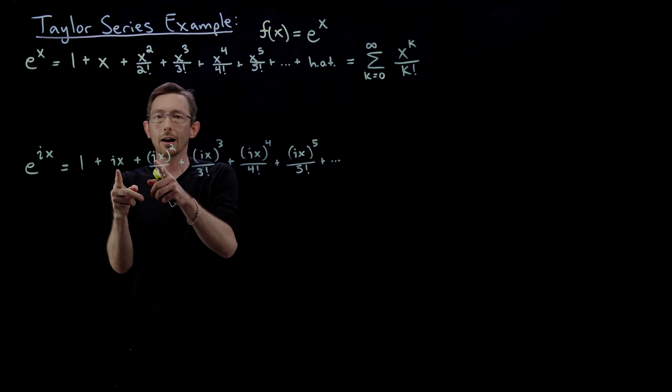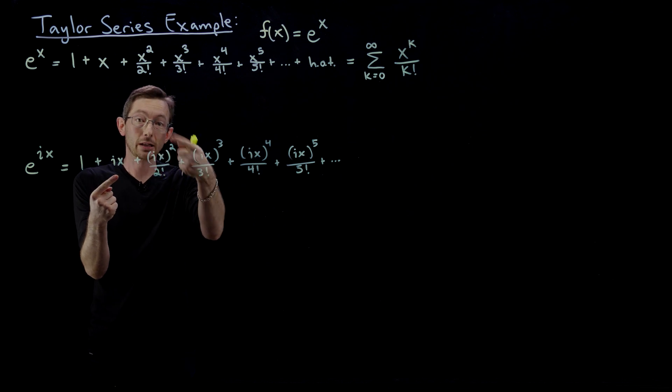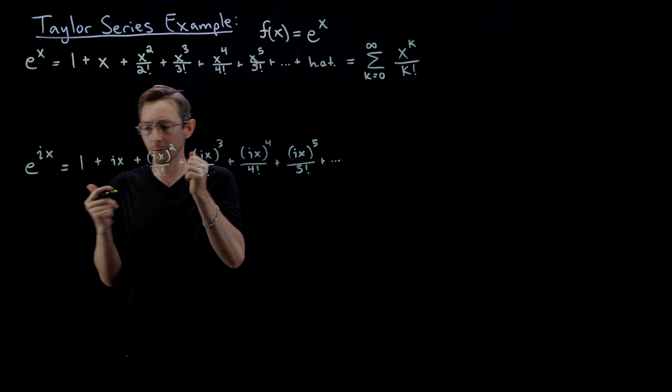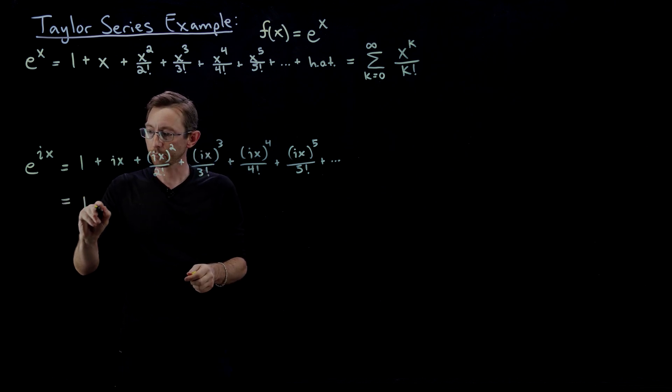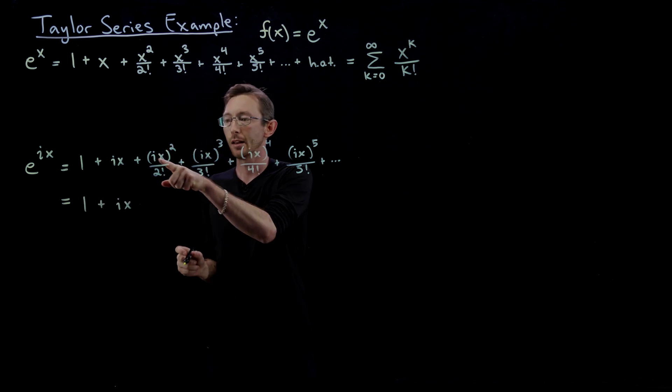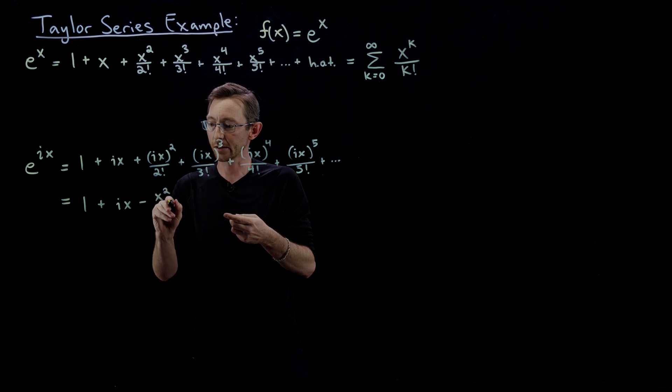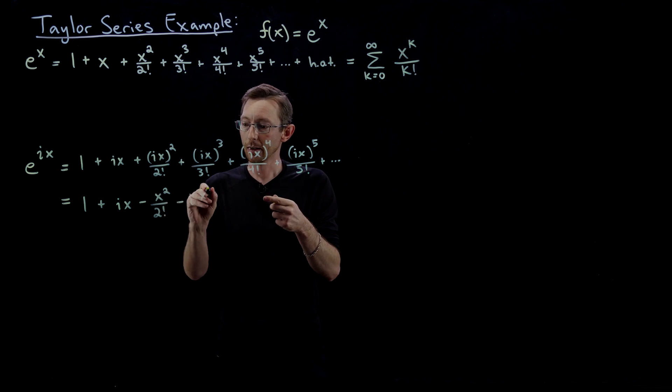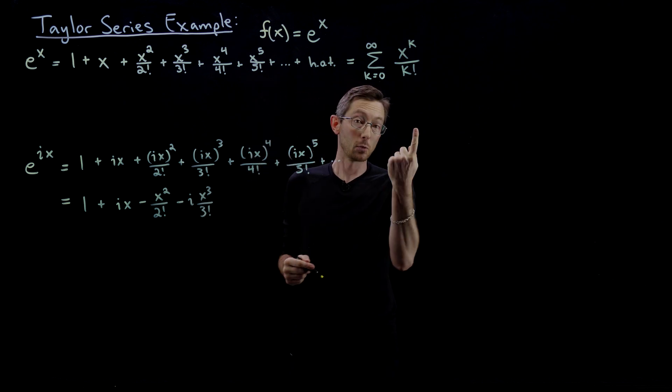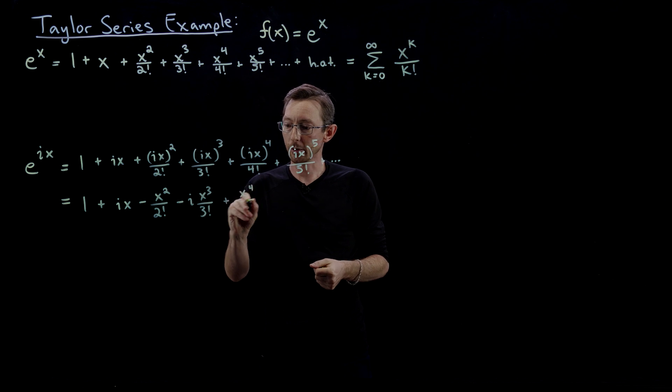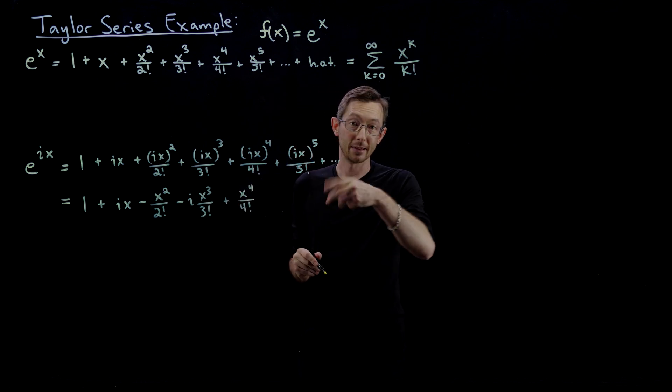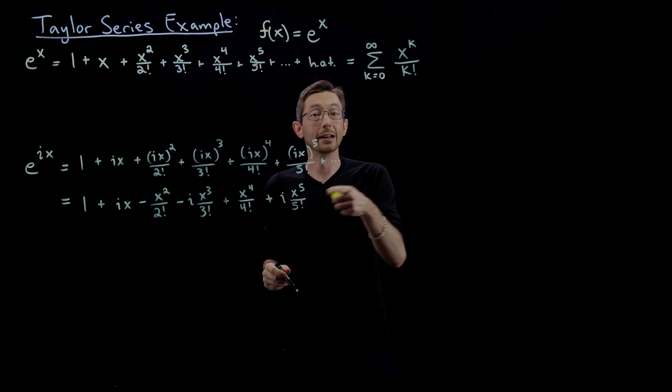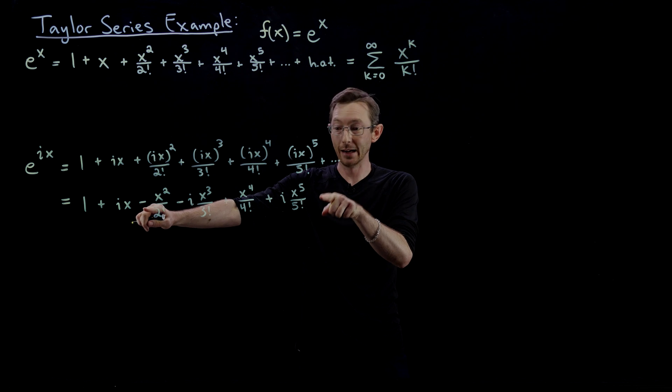Here's where it gets interesting. Anytime I have an i², that's a real number again. Anytime I have i to an odd power, I'm going to have an i pop out. So let me write this out and collect all our terms. This equals 1 + ix. i² is -1, so this is -x²/(2!). i³ is -i, so this is -ix³/(3!). i⁴ is 1 again, so this is +x⁴/(4!). i⁵ is back to i, so this is +ix⁵/(5!).